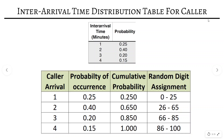First we will calculate the inter-arrival time distribution table for callers. Caller arrival is from one to four minutes, and the probability for each arriving time is given: 0.25, 0.40, 0.20, and 0.15. We calculate cumulative probability: 0.25, then 0.65, then 0.85, then 1.00. For random digit assignment starting from 0: the ranges are 00–25, 26–65, 66–85, and 86–100.